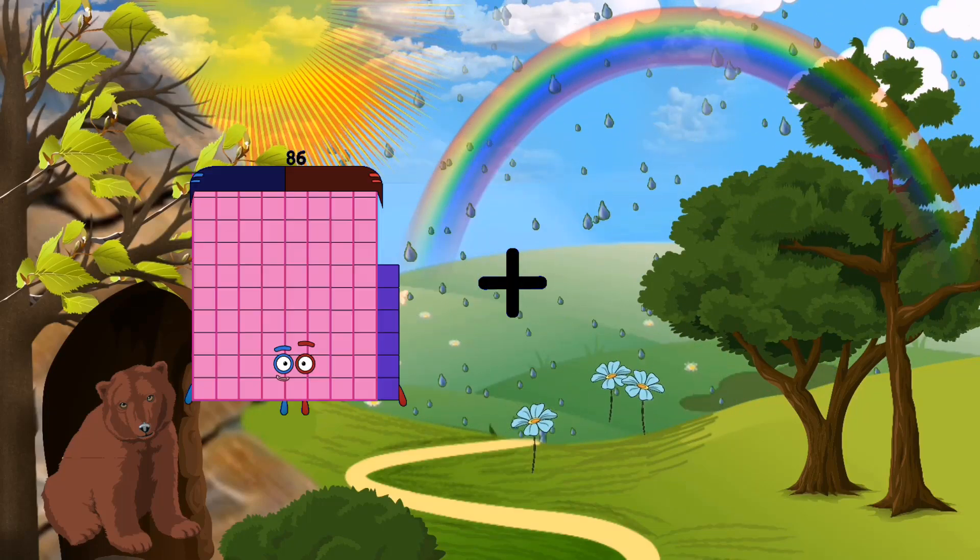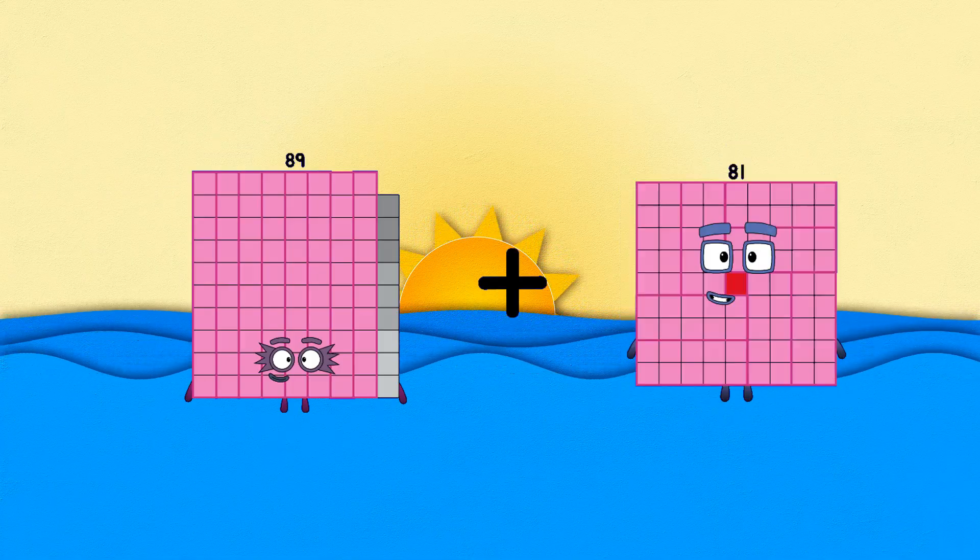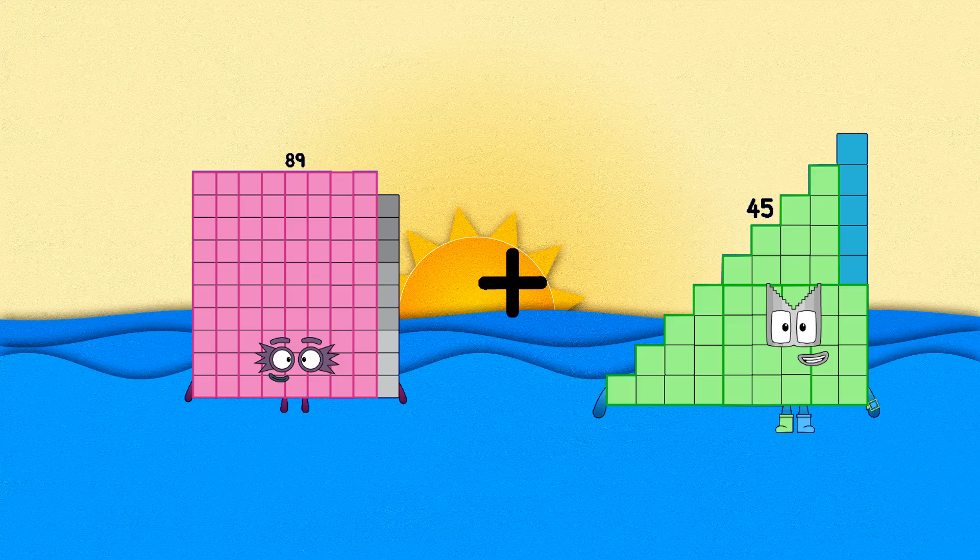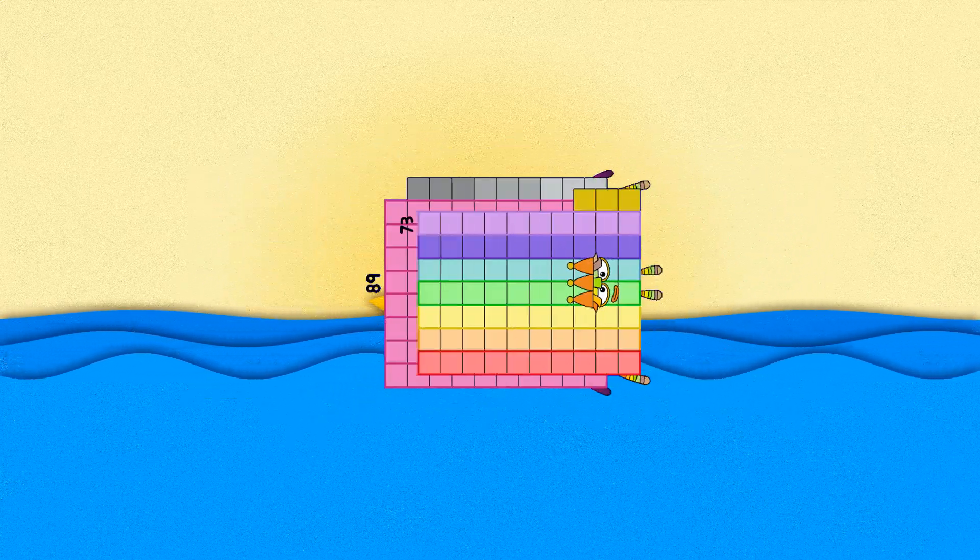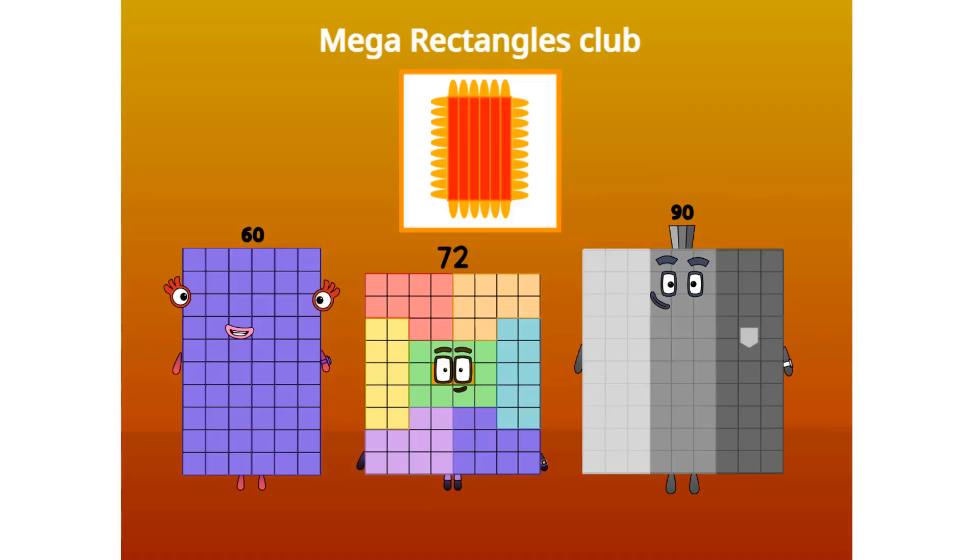Eddie mulling, plus 73 equals 162. Mega rectangles, plus 94.